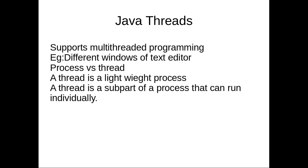A process or program means: suppose that an executable program is there, then if you want to execute that program, you have to allocate memory for that and load it into the allocated memory, and after that it will start execution. That means some memory has to be allocated for the execution of the program. A number of programs can be run at the same time.